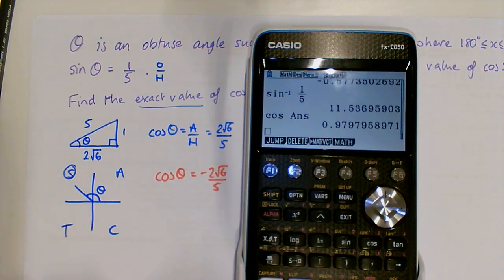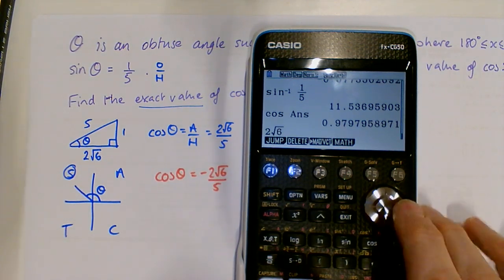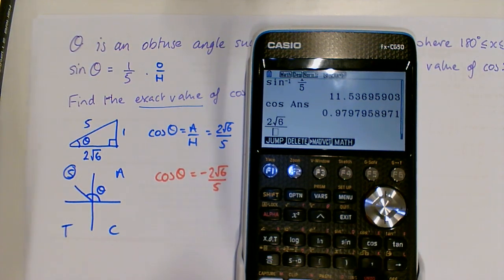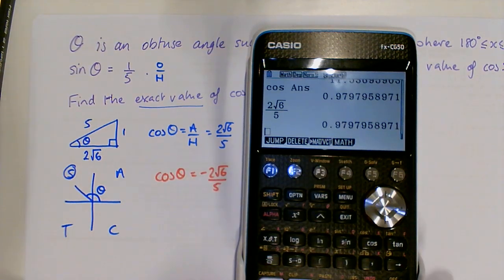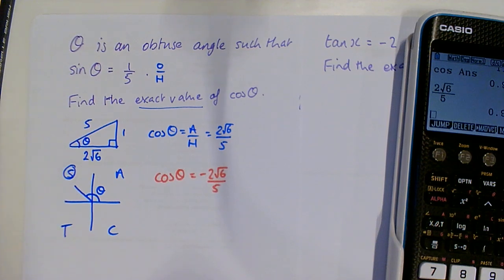then we'd just get a messy decimal. But what we could do is check that 2 root 6 over 5 is, in fact, the same value. And then we know we have an obtuse angle, so we have to have negative.